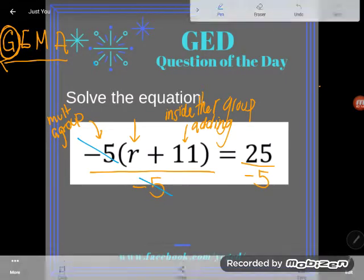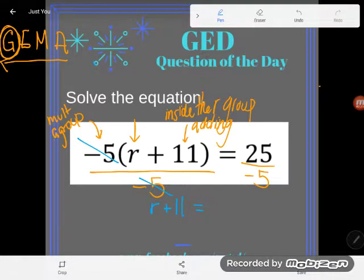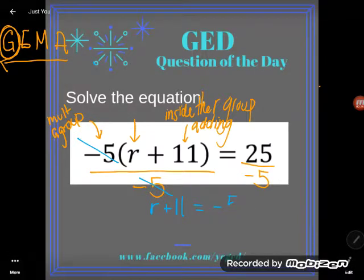Let's see what our new equation will be. Multiplying and dividing by negative five are opposites - they cancel, and now all I have is this r plus 11 group. You might be wondering what happened to the parentheses. If it's the only thing there, I don't need signals telling me to group it anymore. So it just says r plus 11, and 25 divided by negative five is negative five.